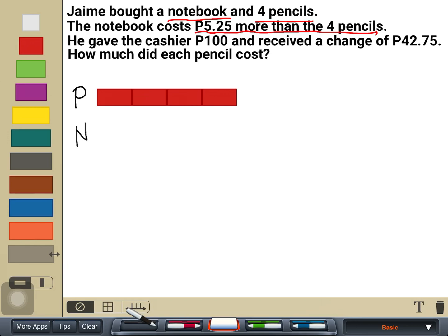For the notebook, we know that it's more than the pencil. But it's not just one pencil. It's more than the four pencils altogether. So we have to find a bar which is longer than the four pencils. So let's pick this one. That's longer. It will show here that it has more than the four pencils.